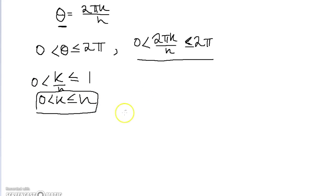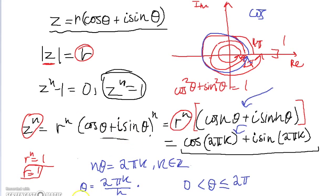But remember, k is an integer, in which case k can only take on these values. It can only be 1, 2, all the way to n. So k can take on n values, in which case theta can take on n values. And so actually, there are n solutions, n distinct solutions that all lie within the first rotation of z to the power n minus 1 equals 0.